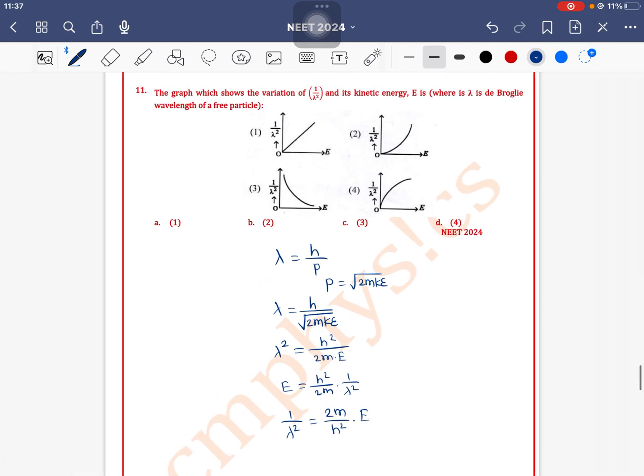If we compare with the standard equation of straight line, Y is equal to Mx plus C, so slope here is 2m by H square.